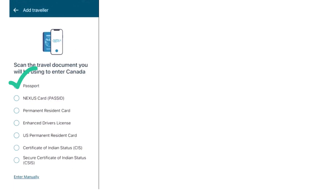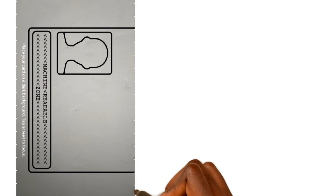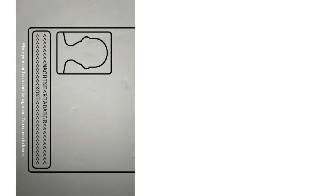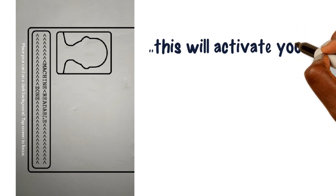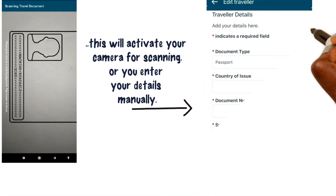Once you click on this option, this will activate your phone's camera for scanning. You put your passport on a dark surface and scan. If not, enter the details manually.